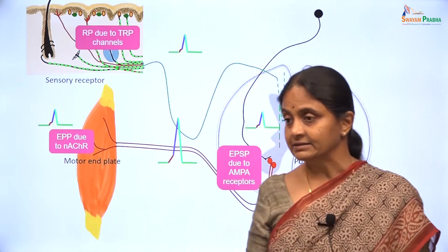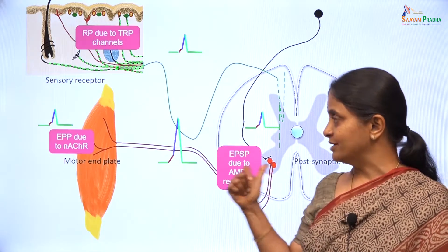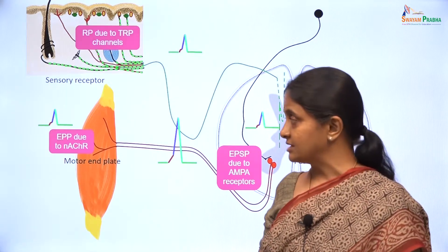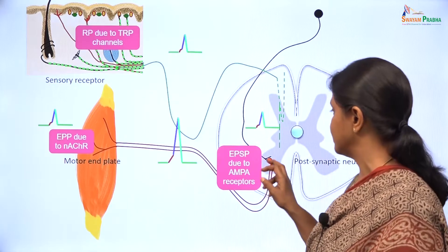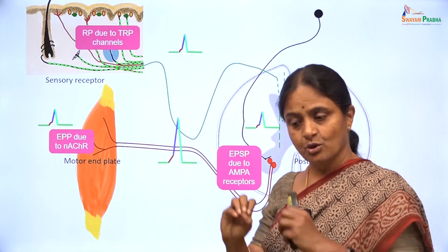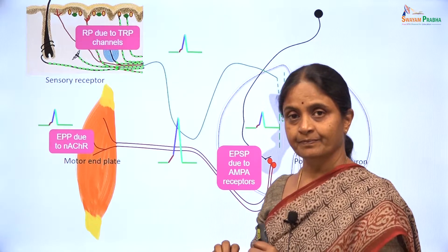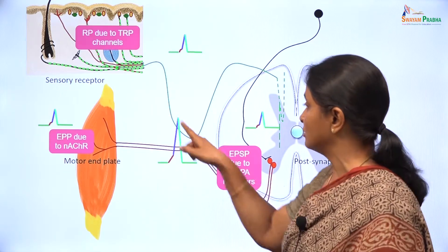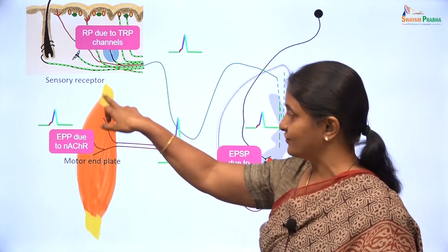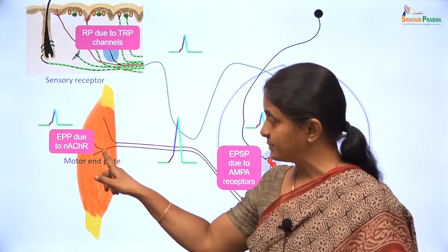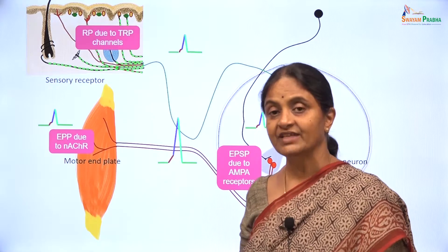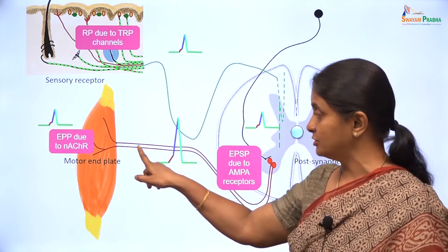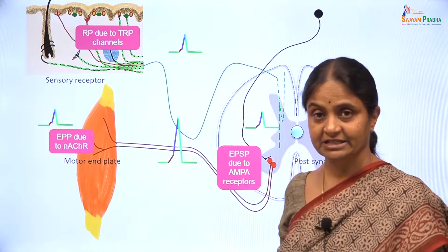The next important thing to understand is that these channels — be it the glutamate receptors, acetylcholine receptors, or the transient receptor potential channels — these channels responsible for the early depolarization in these locations are located only in those sites. Those non-specific cation channels are not found along the length of the neuron or the rest of the muscle. The nicotinic acetylcholine receptor is located only at the motor end plate. If that is the case, we have to understand what causes the early depolarization along the length of the axon and along the rest of the skeletal muscle cell.